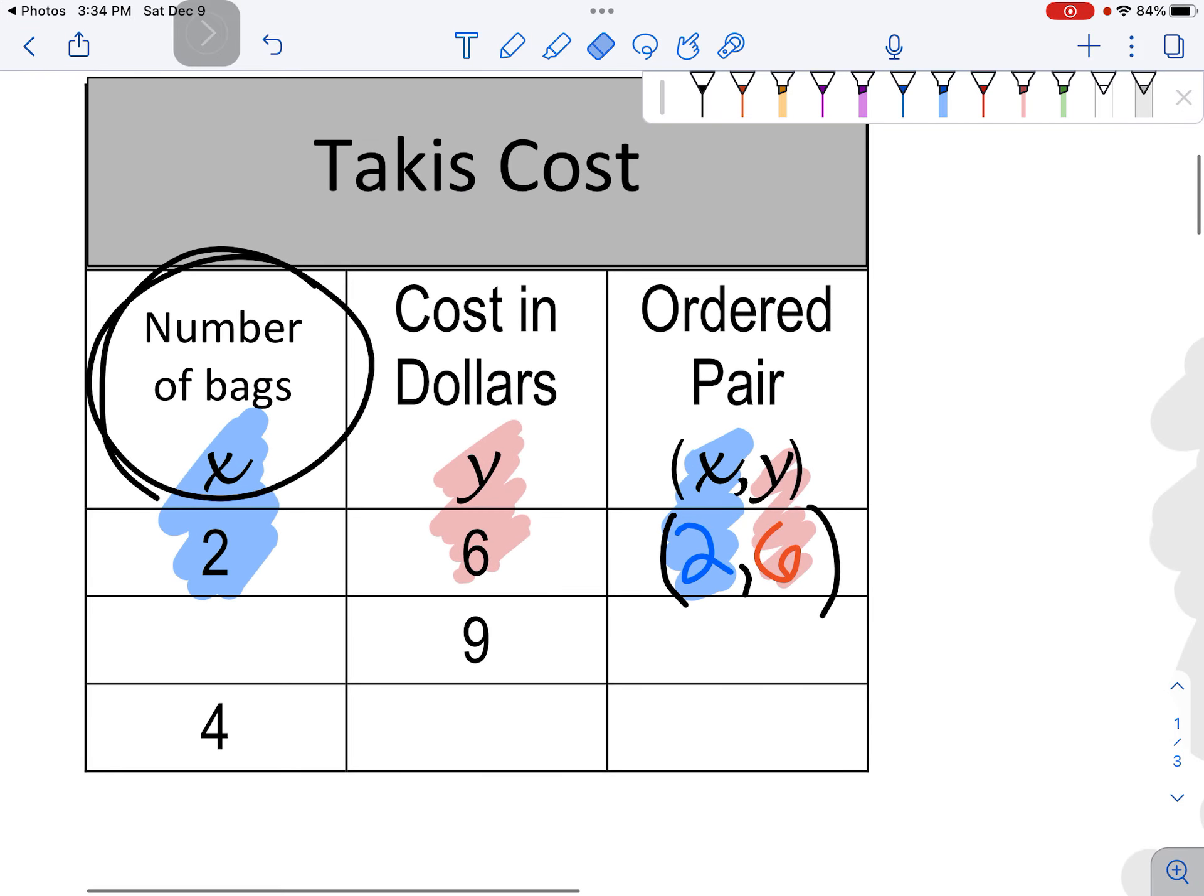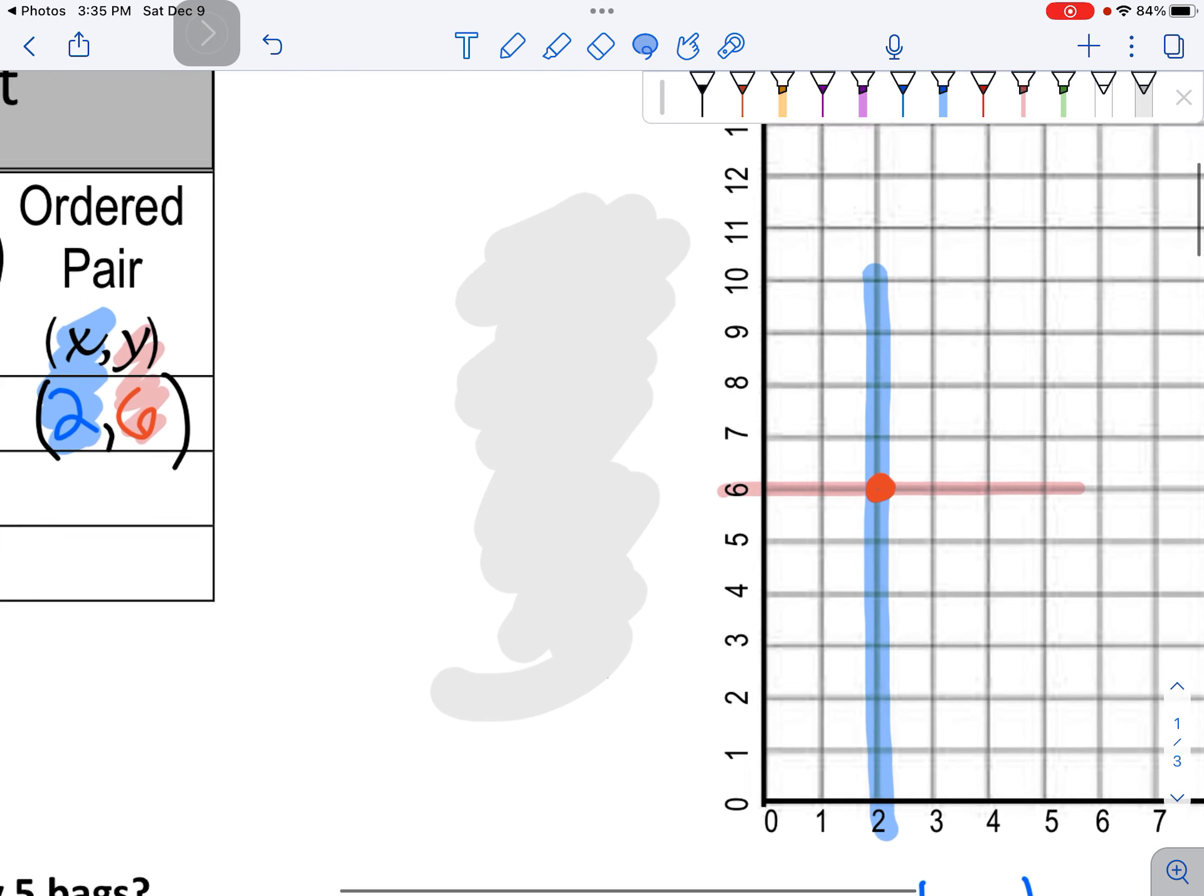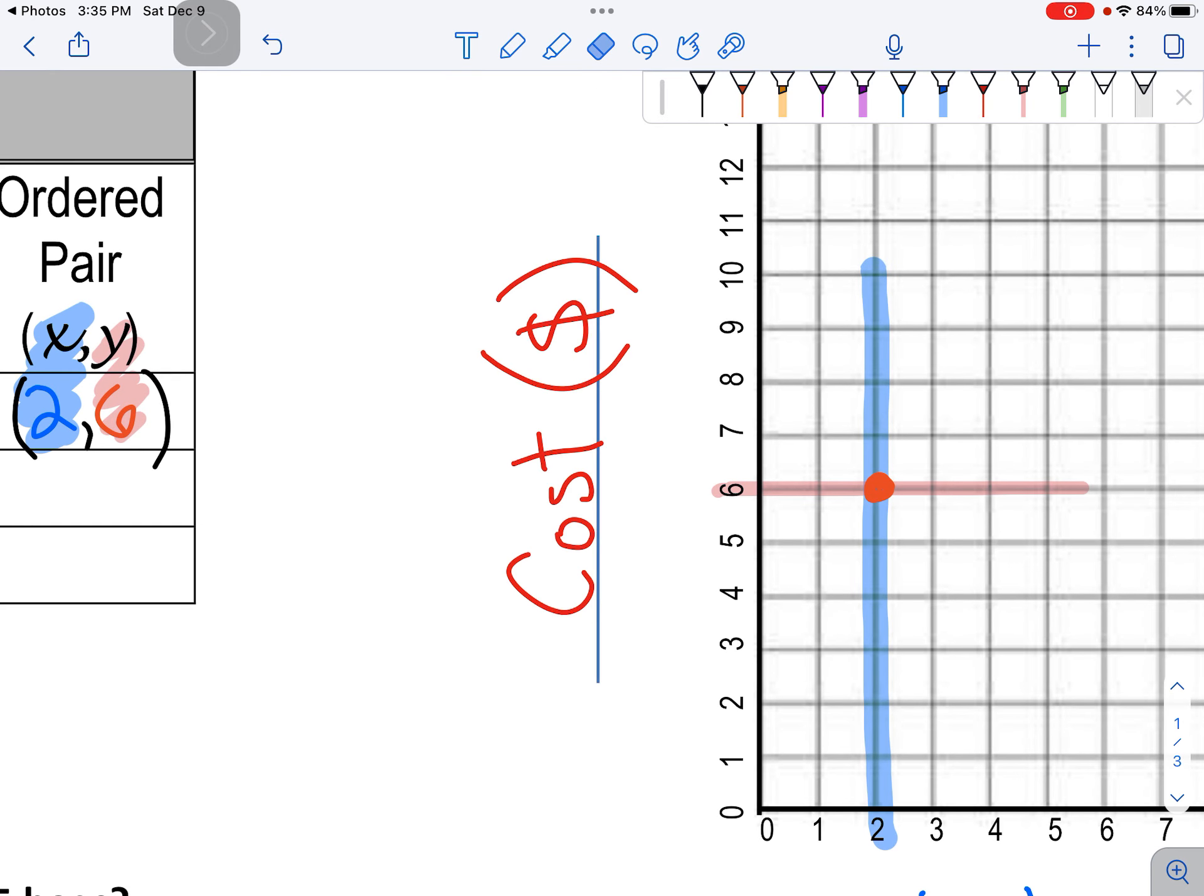And then heading back to the table, it says y, and above the y it says cost in dollars. Then on this line, I put cost with the dollar sign.